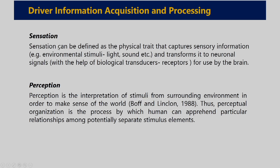The first component is sensation. Sensation can be defined as a physical trait that captures sensory information from the environment or our ambient surroundings. Our sense organs contain neuronal receptor cells which act as biological transducers — they convert physical stimuli to electrical signals. In brief, sensation is the process by which our various biological transducers (receptors) convert physical stimuli to electrical signals, which then travel towards the brain through neurons or nerve fibers.